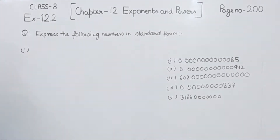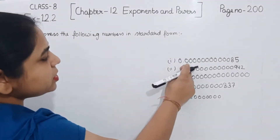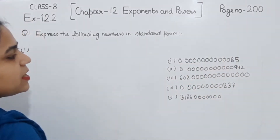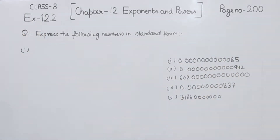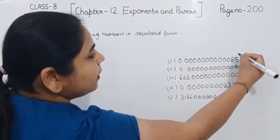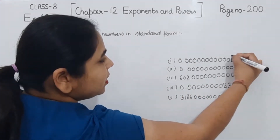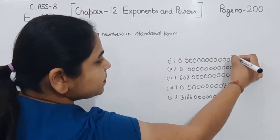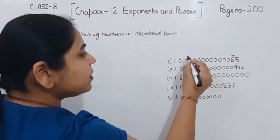In the first one, the number we are having is 0.000...85. Now we have to write this one in standard form. So for the first one, we have to transfer this decimal to here — one digit here. We have to transfer this decimal, so I am going to count how many places there are.